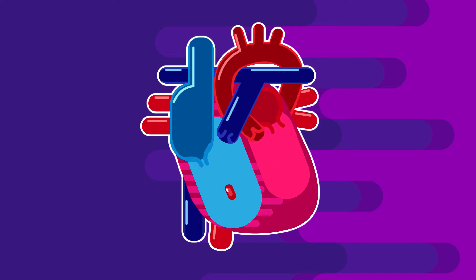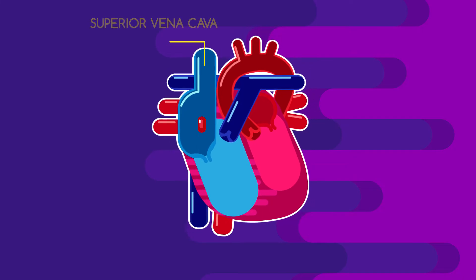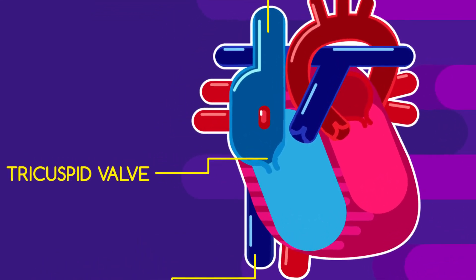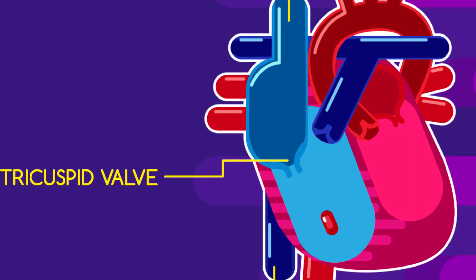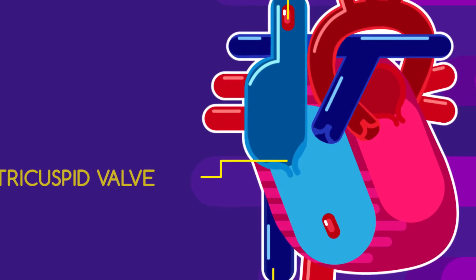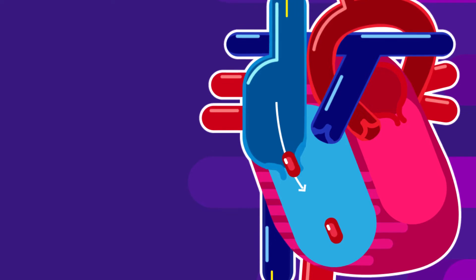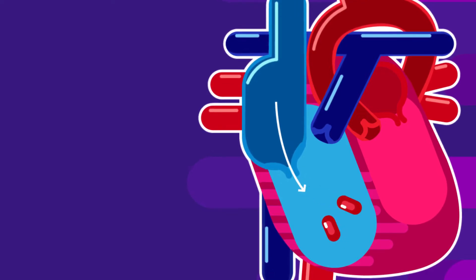The deoxygenated blood returns to the right atrium of your heart via two veins: the superior vena cava, if it's coming from the upper part of your body, and the inferior vena cava, if it's from the lower part. The blood then passes through the tricuspid valve into the right ventricle. The tricuspid valve acts as a special gate, designed so that the deoxygenated blood can only flow onwards into the right ventricle.